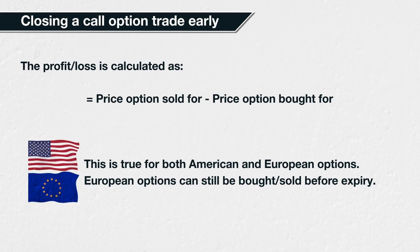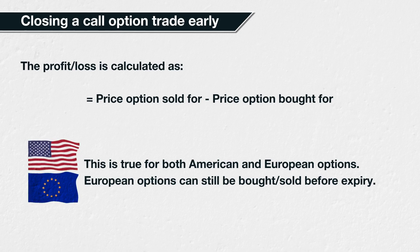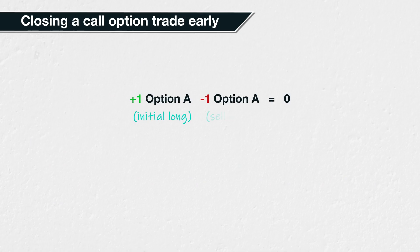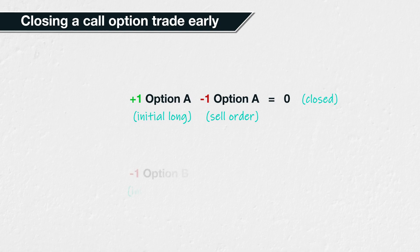It is a common misconception that because European options cannot be exercised early, European option traders are forced to hold their positions until expiry. However, this is not correct. For example, on Deribit all the options are European and therefore cannot be exercised early, but you are still free to close an option position at any time by reducing your position to zero. If you are long an option, closing the position would be done by selling the option back to another trader, reducing your net position to zero. If you are short an option, closing the position would be done by buying back the option from another trader, reducing your net position to zero.